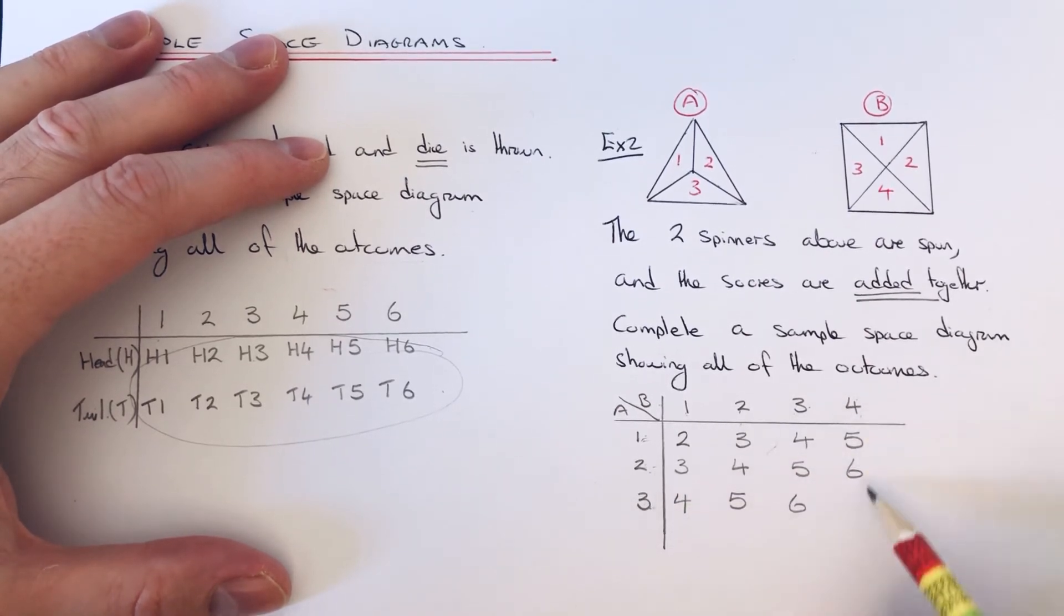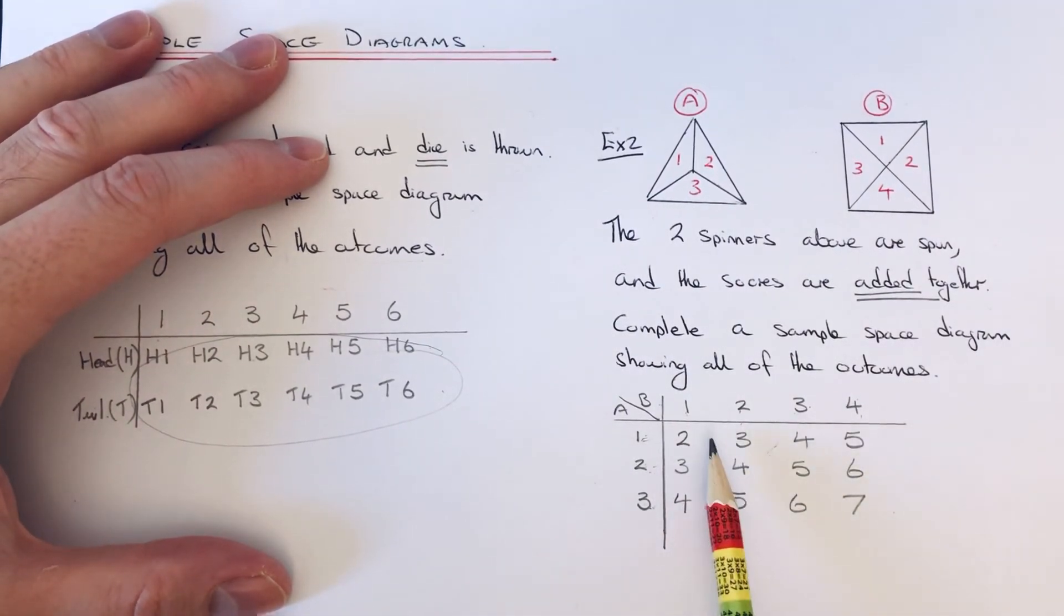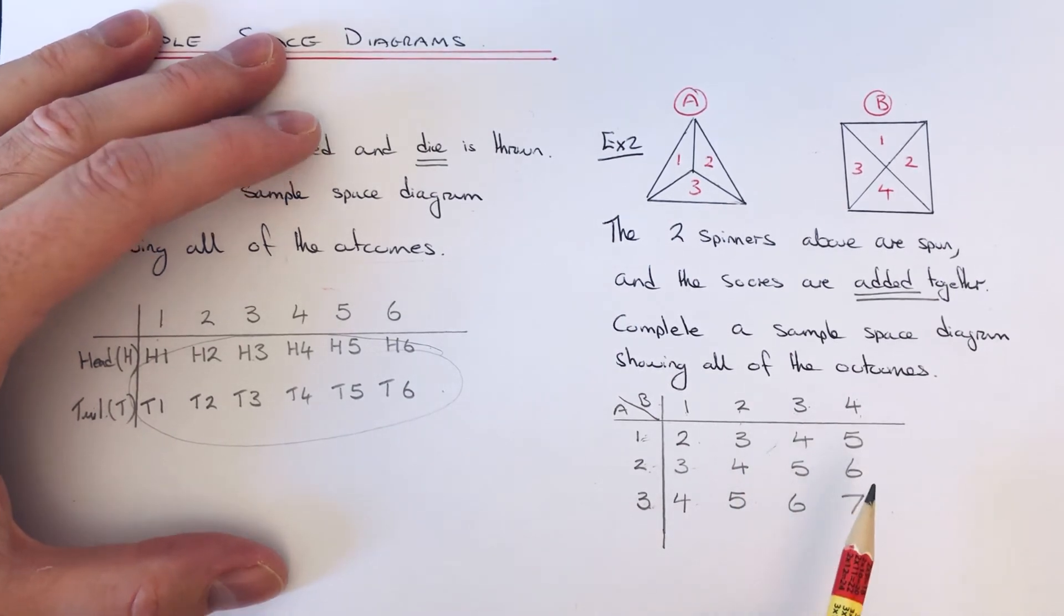So there's all our outcomes. We've got 1, 2, 3, 4, 5, 6, 7, 8, 9, 10, 11, 12 - so again we've got 12 outcomes there.